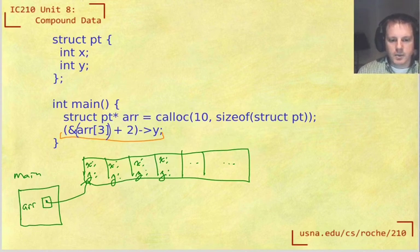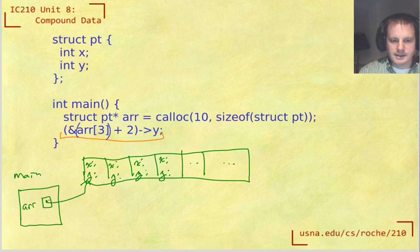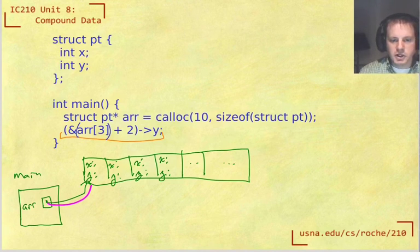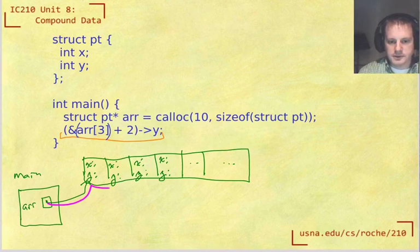So array index three, what does array indexing mean? We follow the arrow, then jump ahead by that many spots. So 1, 2, 3.